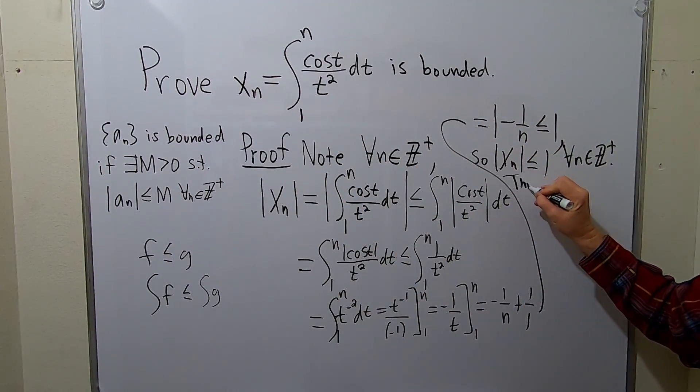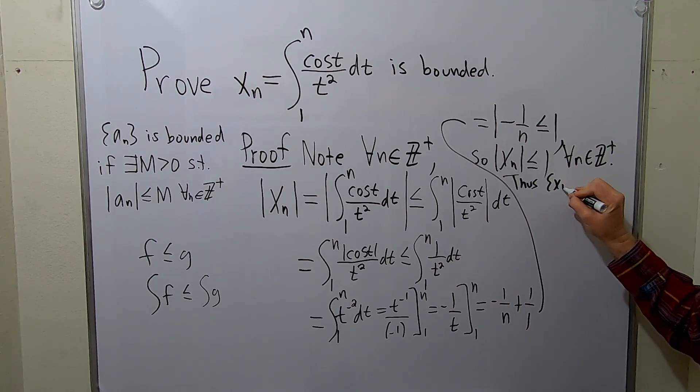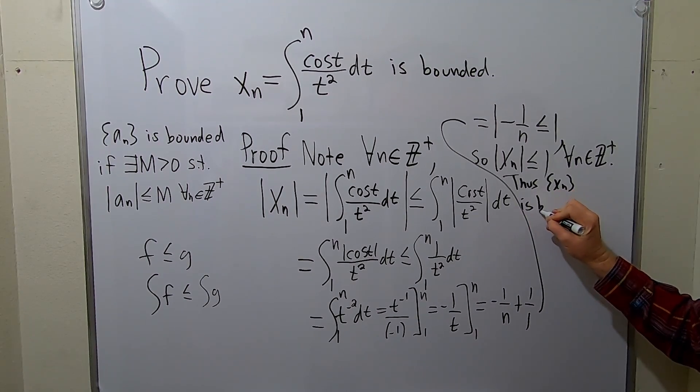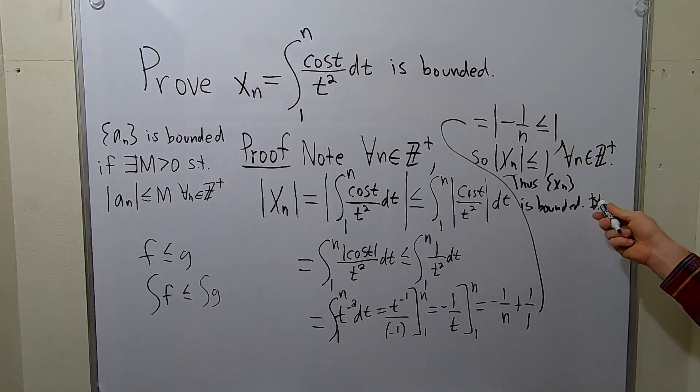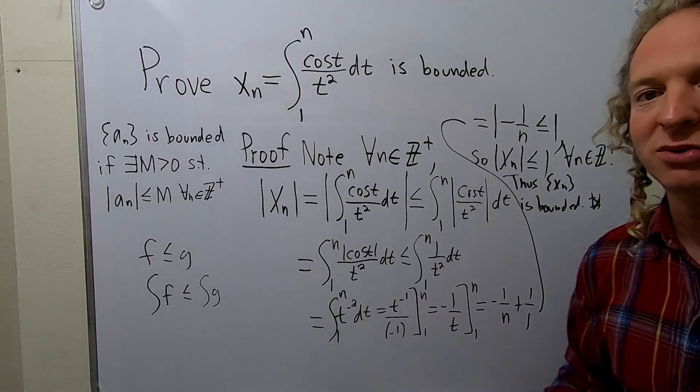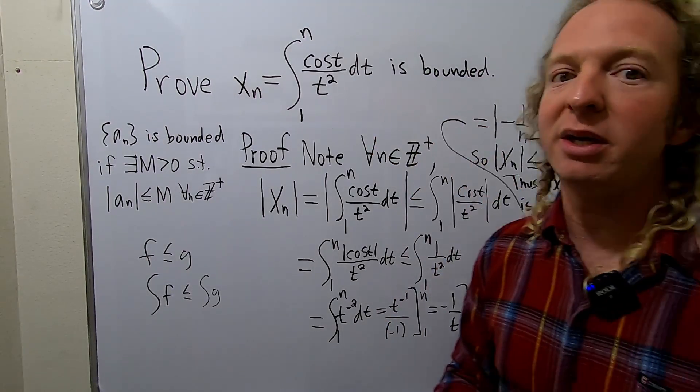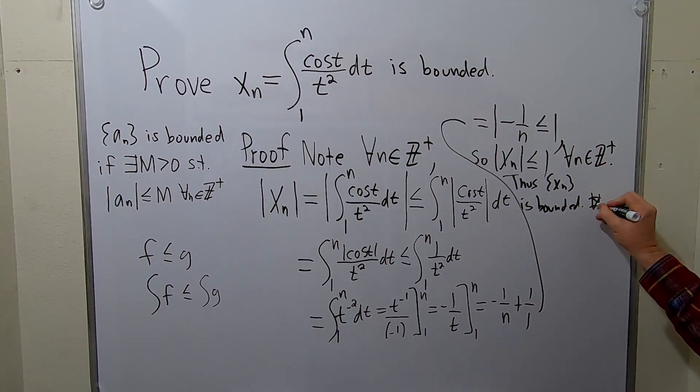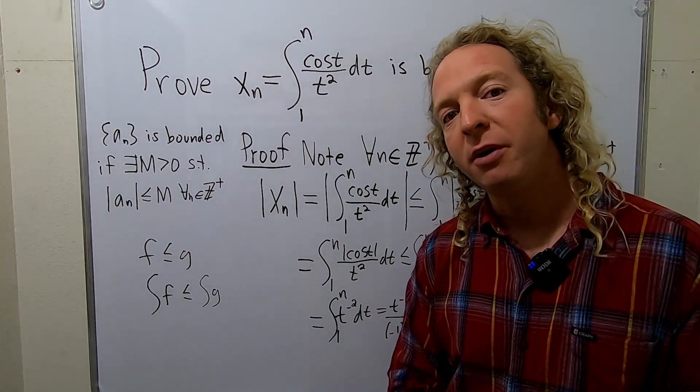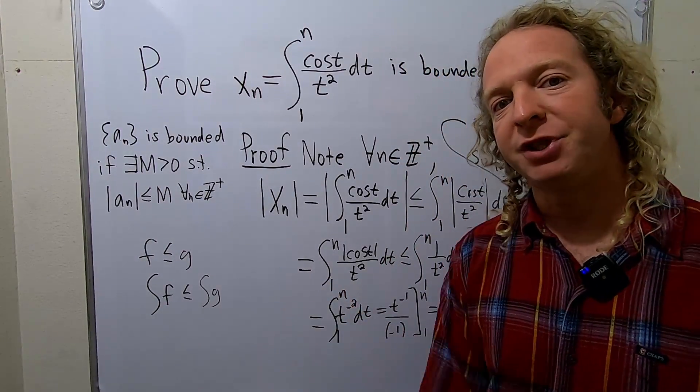So thus, our sequence x sub n is bounded. And that completes the proof. I like to finish my proofs with a box with an x. That's just what I use. The old school way is QED. Maybe it's still new school. I don't use QED. I stole that from someone else. I hope this video has been helpful. Take care.